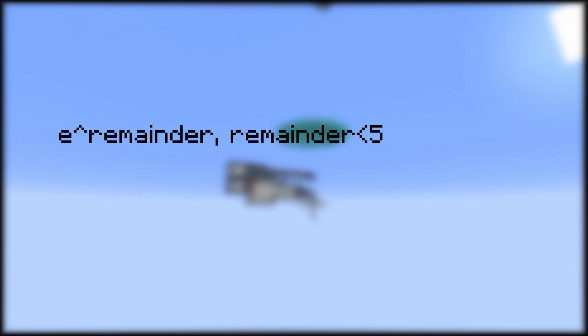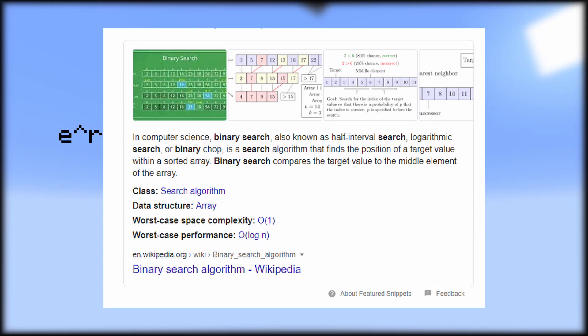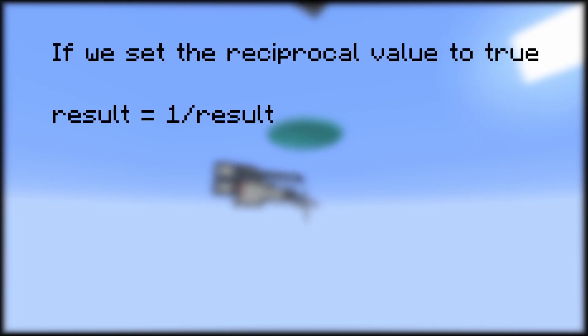For those unaware, binary search is a method you can use to search things without going through a whole list. Anyways, now that we have a value, if the reciprocal value is set to 1, we divide 1 by this value, and then we're done.